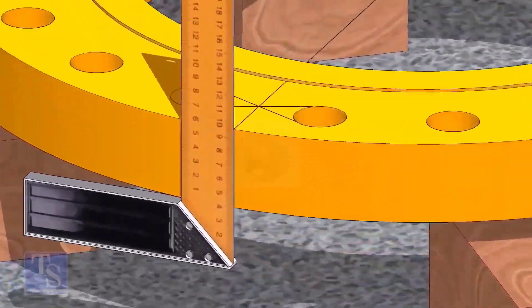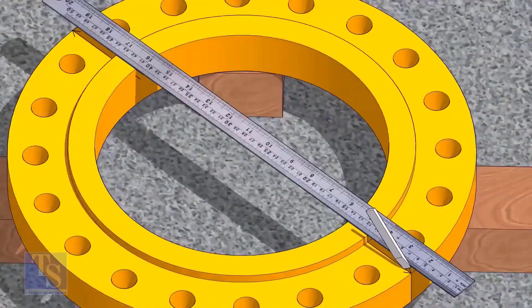Now, transfer the center line to the sides of the flange. Overturn the flange and transfer the center line on the back side of the flange.